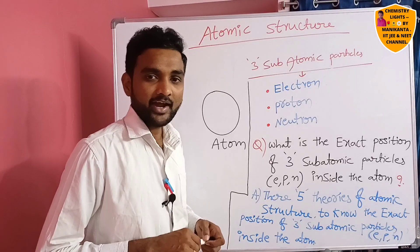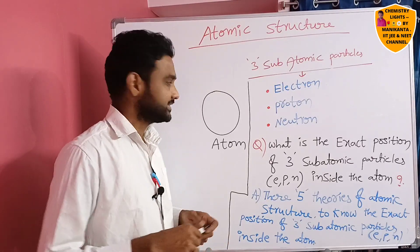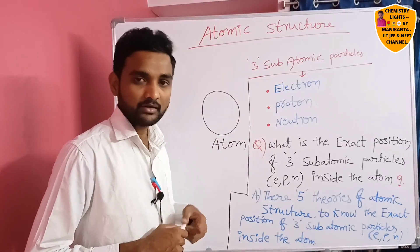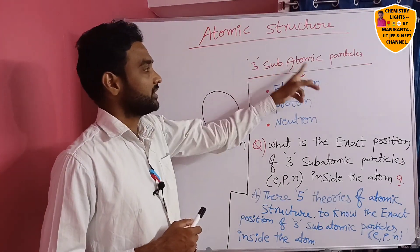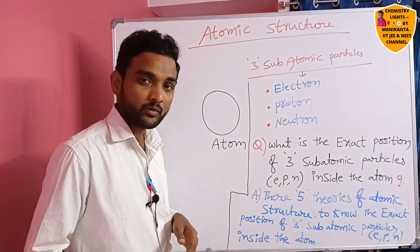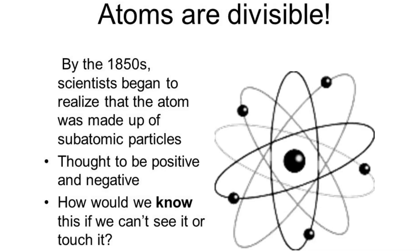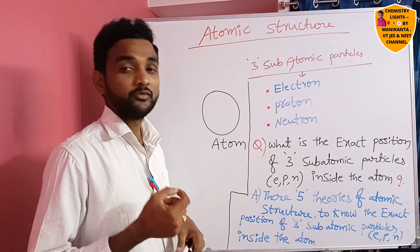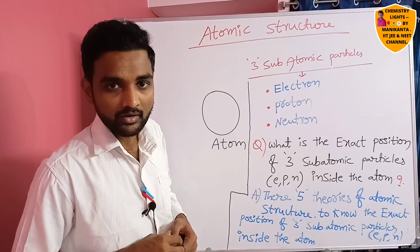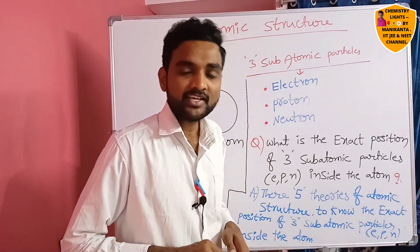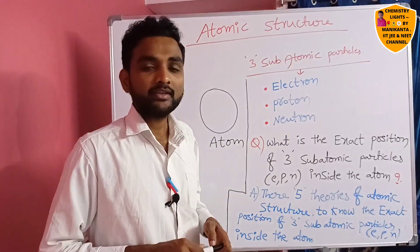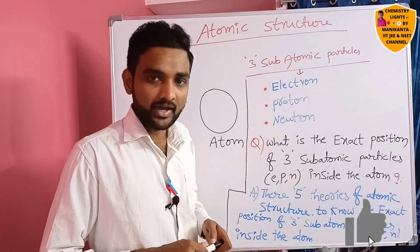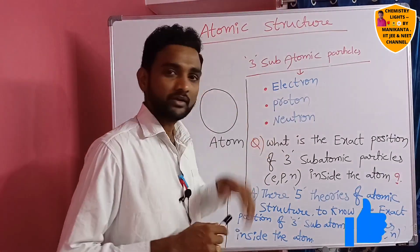Up to now we read about the atom — that the atom is indivisible. But from yesterday's class we got clarity that from the atom three subatomic particles are released: electron, proton, and neutron. So now the atom is divisible. Inside the atom there are three subatomic particles: electron, proton, and neutron.